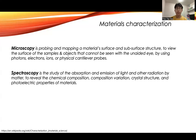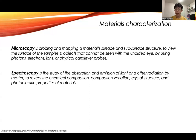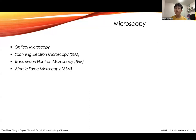The spectroscopy technique uses the absorption and emission phenomena of light or other radiation by matter, to understand the chemical composition inside the material, the composition variation, the crystal structure, and the electrical properties of the material. So we have two main types of characterization for material science: microscopy and spectroscopy. Let's start with microscopy.